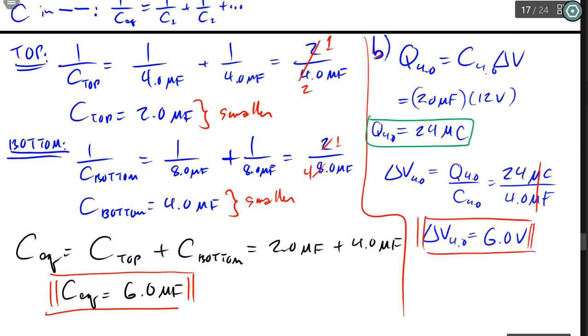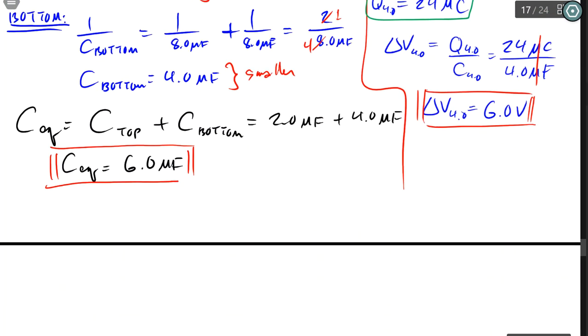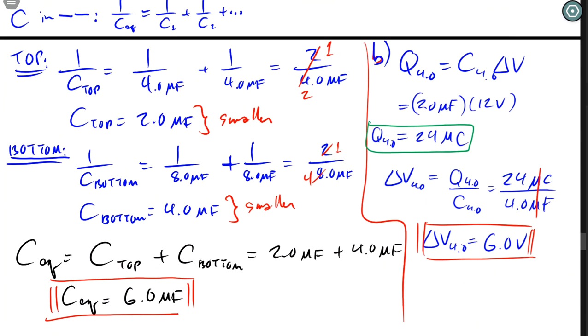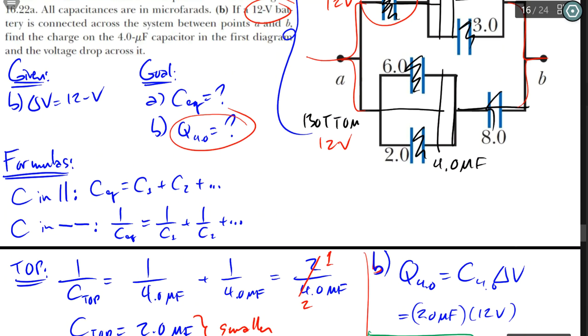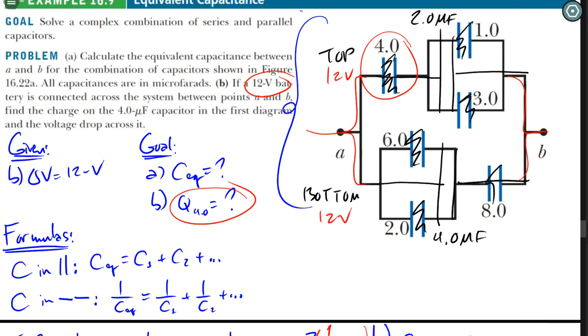So of the 12 volts that was applied, 6 of it is being used up by that capacitor. Now hopefully you didn't get lost, like I did, through the second part, but the first part, if you can see how to break it down from the inside out and then taking it one bite at a time, you can actually tackle large, complicated circuits. Cool. Take note, and hope you all enjoyed. Ciao!